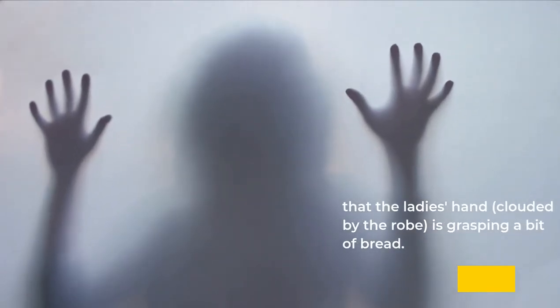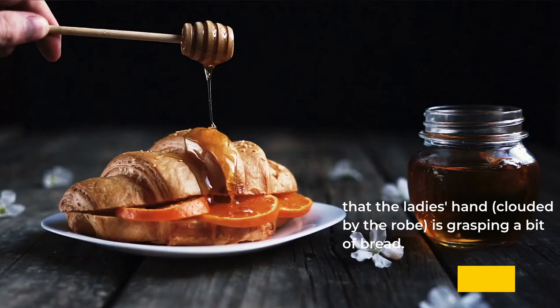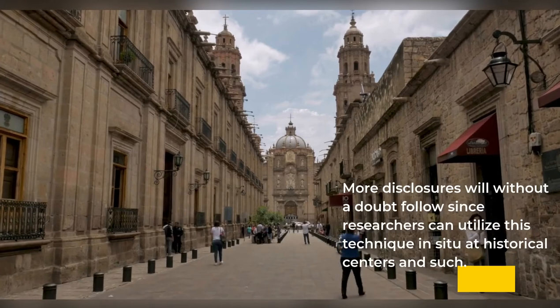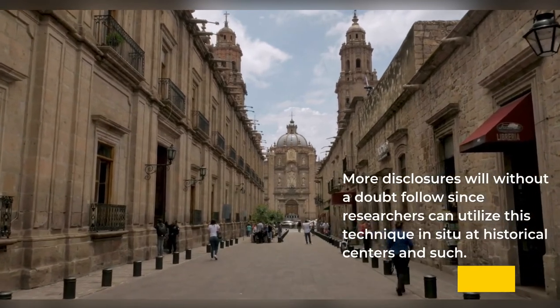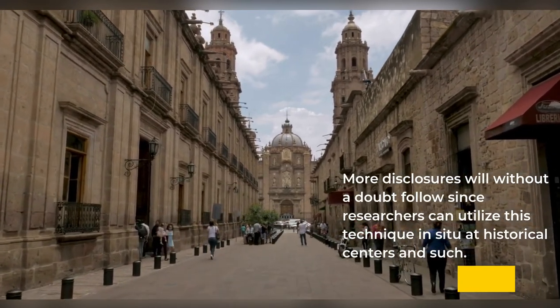The woman's hand, obscured by the robe, is grasping a piece of bread. More discoveries will undoubtedly follow since researchers can use this method in situ at museums and such.